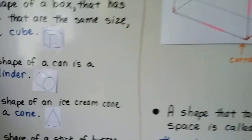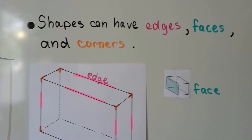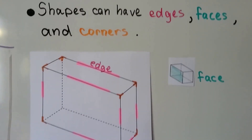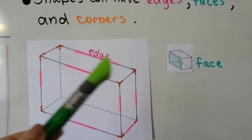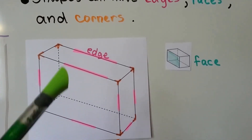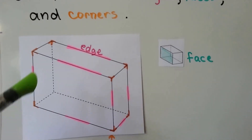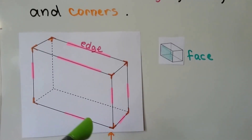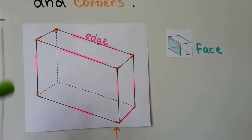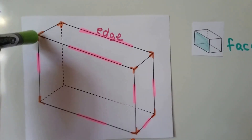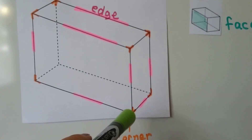Shapes can have edges, faces, and corners. These pink parts are the edges — it's where the faces meet each other. And here are the corners: here's a corner, here's a corner, here's a corner, here's a corner.